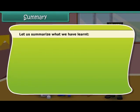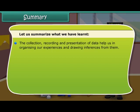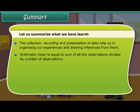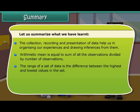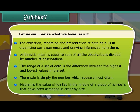Let us summarize what we have learned. The collection, recording and presentation of data help us in organizing our experiences and drawing inferences from them. Arithmetic mean is equal to the sum of all the observations divided by the number of observations. The range of a set of data is the difference between the highest and lowest values in the set. The mode is simply the number which appears most often. Median is the value which lies in the middle of a group of numbers that have been arranged in order by size.